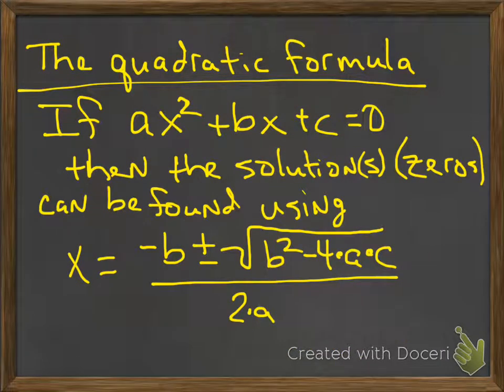And sometimes some methods work better than others. Now, a couple of things I would like to mention. The quadratic formula says this: If ax squared plus bx plus c equals zero, then the solutions, the zeros, can be found using that formula right there. And it does look like it's complicated to say negative b plus or minus square root of b squared minus four times a times c, all that divided by 2a.